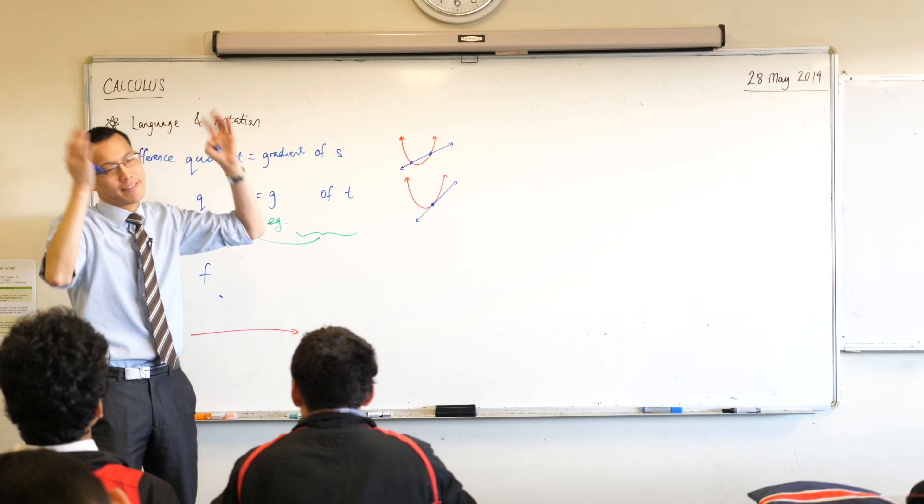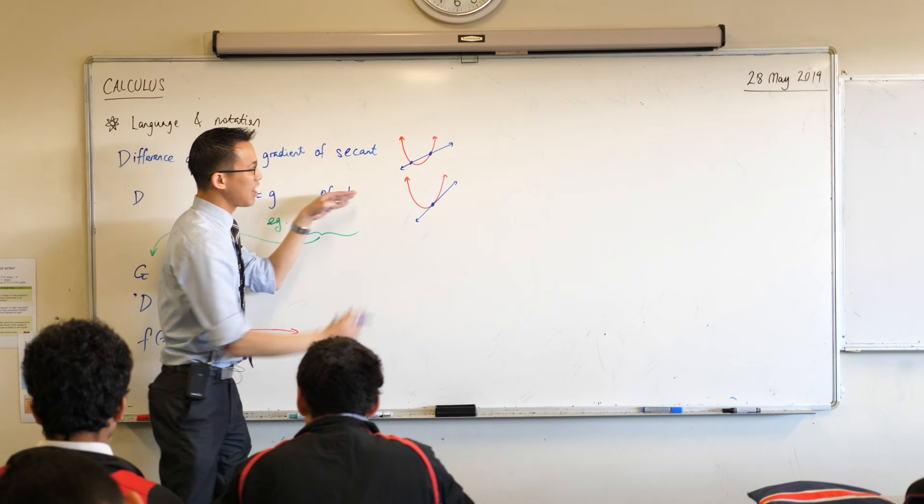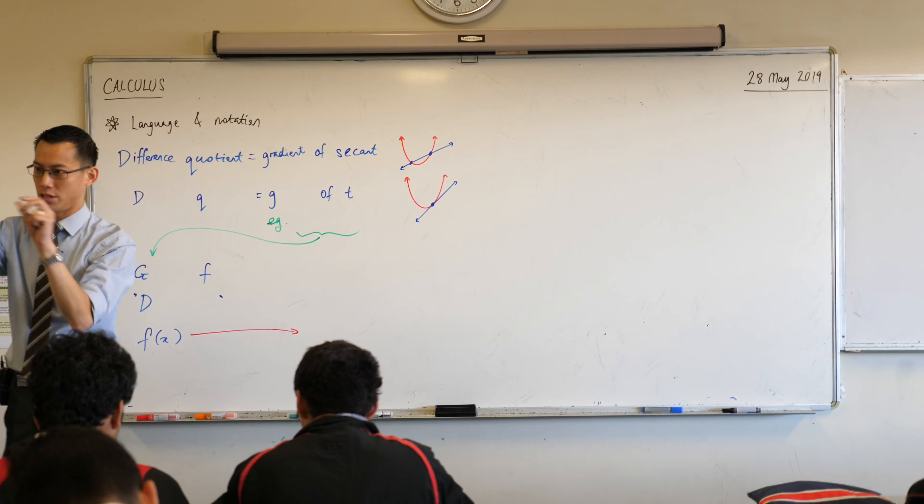A secant or a second, right? I literally have no idea how it's meant to be pronounced, but we know what we're talking about. This is a line that slices across the graph at two distinct points.